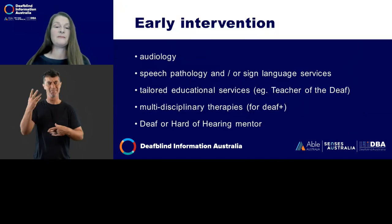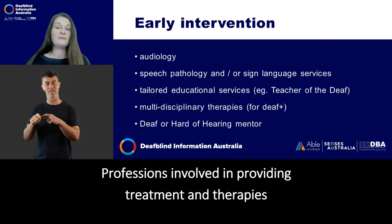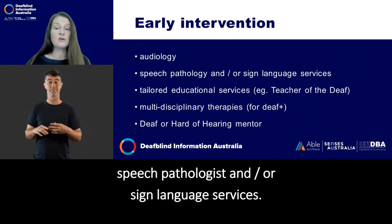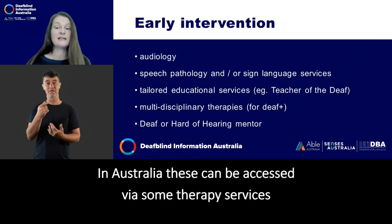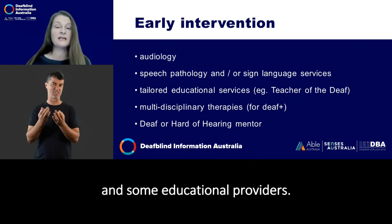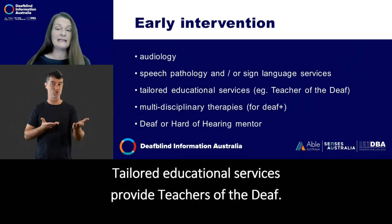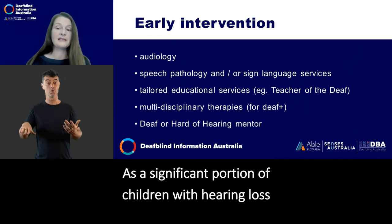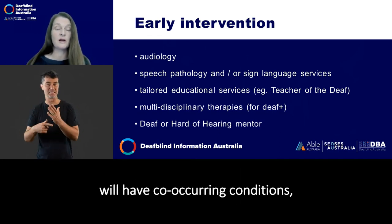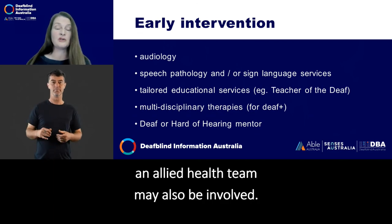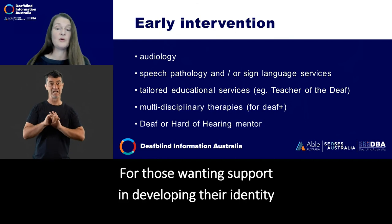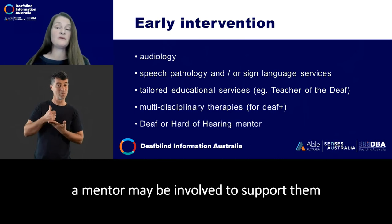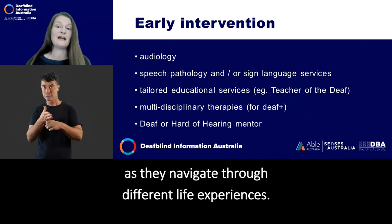Early intervention. Professionals involved in providing treatment and therapies for children with hearing loss include audiologists, speech pathologists and sign language services. In Australia, these can be accessed via some therapy services and educational providers — tailored educational services provide teachers of the deaf. As a significant portion of children with hearing loss will have co-occurring conditions, an allied health team may also be involved. For those wanting support in developing their identity as a deaf or hard of hearing person, a mentor may be involved to support them as they navigate through different life experiences.